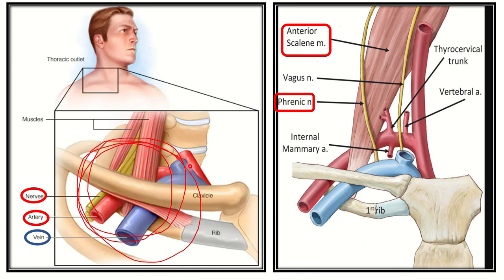To summarize: between the anterior and middle scalene, there is the subclavian artery and brachial plexus. In front of the anterior scalene, there is the subclavian vein, phrenic nerve, and vagus nerve. This relationship is very, very important for the MRCS exam.